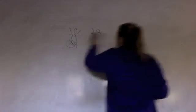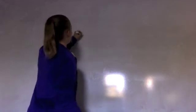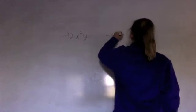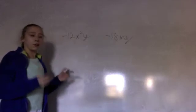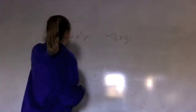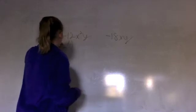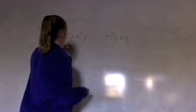Now let's do one with a negative and have multiple variables. Let's use -12x²y and -18xy. The factors for 12x²y would be -6x and 2xy.